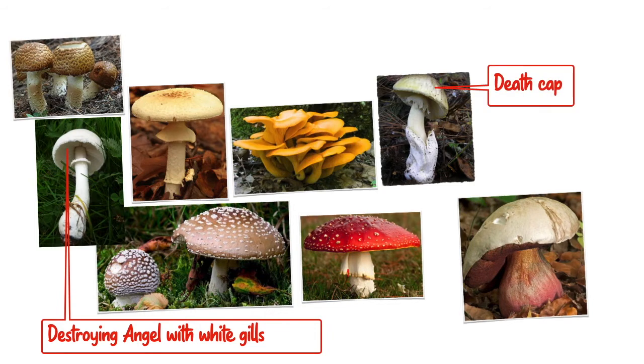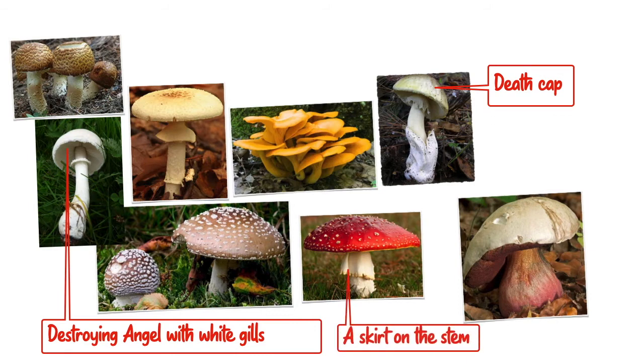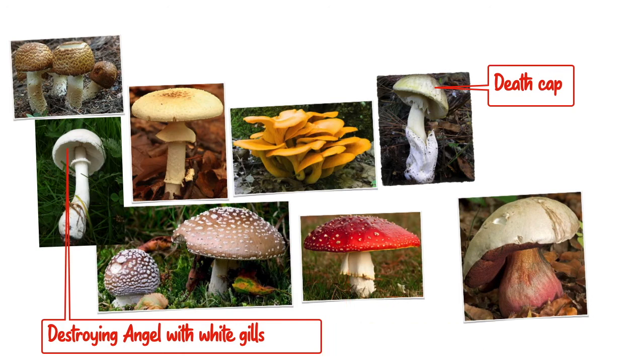Some mushrooms are poisonous even when eaten raw. Poisonous mushrooms can be identified by a skirt on the stem, a stem that looks like it is swelling at the base, and they often have white gills.